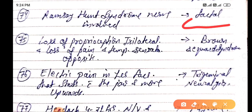Loss of proprioception ipsilateral and loss of pain and temperature sensation opposite is mainly due to Brown-Sequard syndrome.